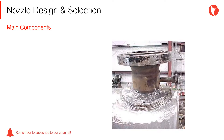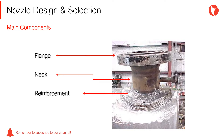The main components of a nozzle are the flange, the neck, and the reinforcement. There are different types of flanges, necks, and reinforcements. Each element will be designed depending on the requirements and service of the equipment.